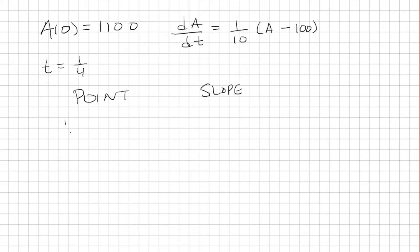The point is at t equals 0, and we said A is 1,100. The slope is going to be dA over dt at t equals 0. So we're going to use this formula. It's 1 over 10, then A sub zero minus 100.